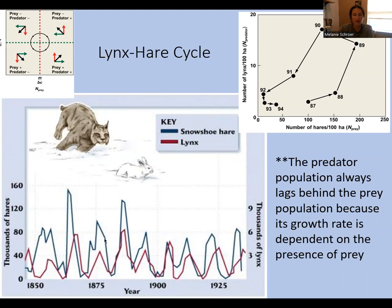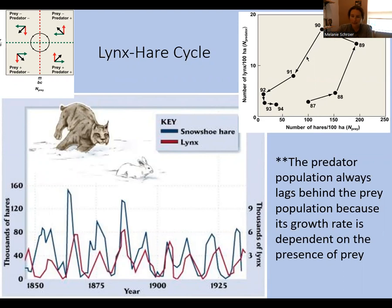With lots of lynx and lots of hares, the lynx eat the hares and the hare population decreases. As the hare population decreases, the lynx population must also decrease. And so on and so forth — the cycle repeats, just like the Lotka-Volterra model. In Gause's classic experiments, two protozoan species were raised together. In simple media with no shelter, the predator wiped out the prey and then starved. When a refuge was added, prey could hide, the predator population collapsed, and some prey survived — but this wasn't the natural oscillating cycle.